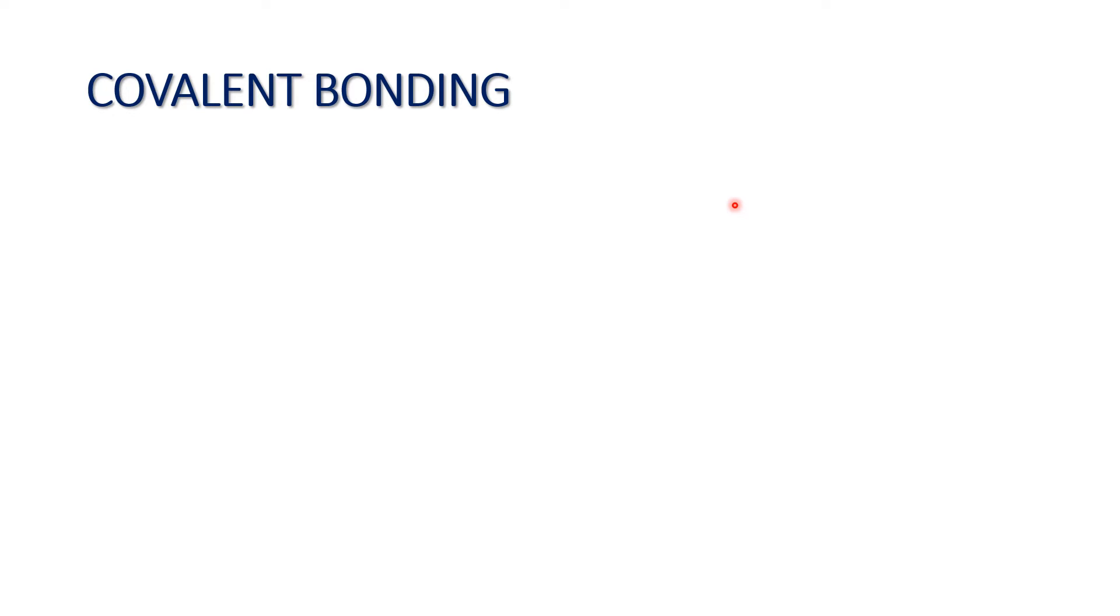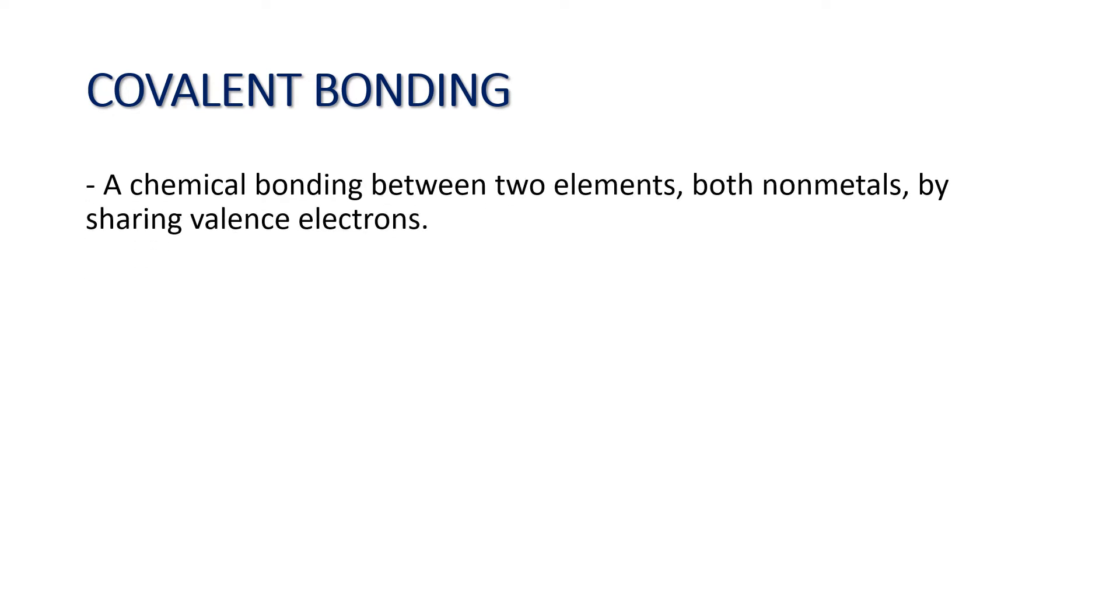Covalent bonding is a bonding between two elements, both are nonmetals, by sharing valence electrons. The difference of covalent bonding from ionic bonding is that it involves sharing of valence electrons, while for ionic bonding, it is through transferring of valence electrons from a metal to a nonmetal.